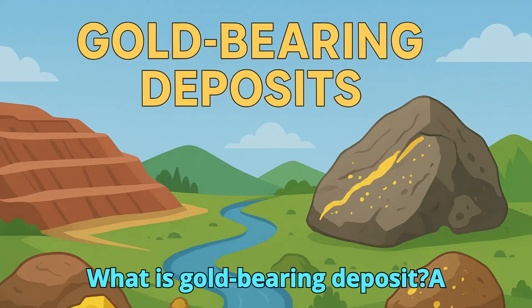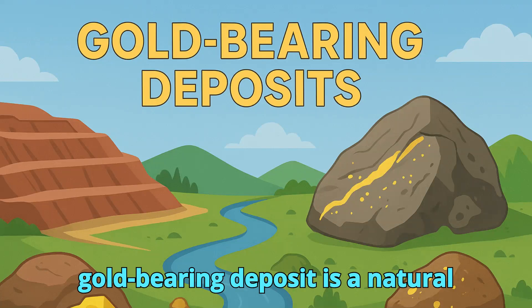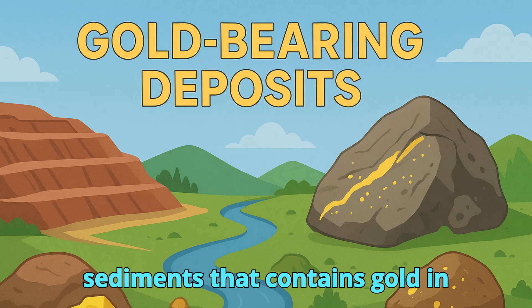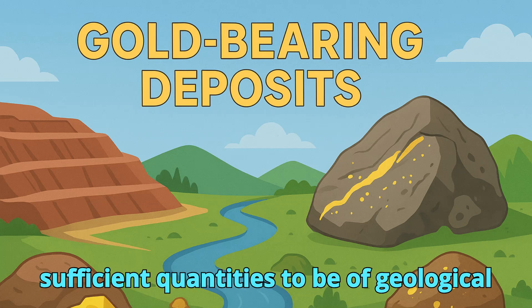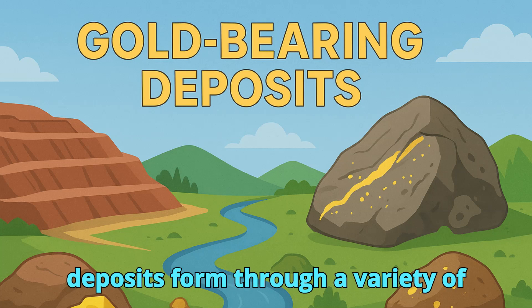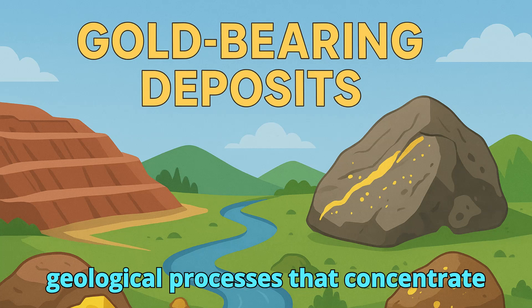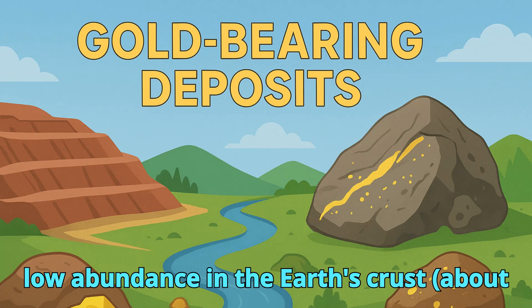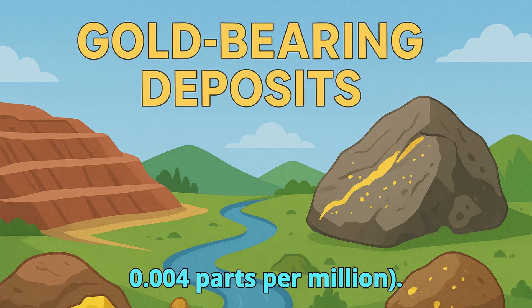What is a gold-bearing deposit? A gold-bearing deposit is a natural concentration of rocks, minerals, or sediments that contains gold in sufficient quantities to be of geological or economic interest. These deposits form through a variety of geological processes that concentrate gold from its widespread but usually very low abundance in the earth's crust — about 0.004 parts per million.